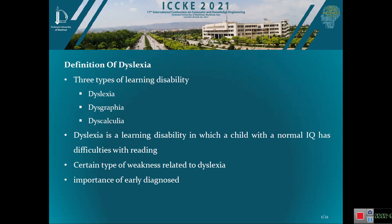At the first step, I should tell you about the definition of dyslexia. In the world, three types of learning disabilities exist: dyslexia, dysgraphia, and dyscalculia. Dysgraphia is related to handwriting weakness and dyscalculia is related to mathematical weakness. But in this research, we focus on dyslexia. Dyslexia is a learning disability in which a child with a normal IQ has difficulties with reading, linked to weaknesses such as visual memory impairment, auditory sensitivity impairment, attention, and so on.